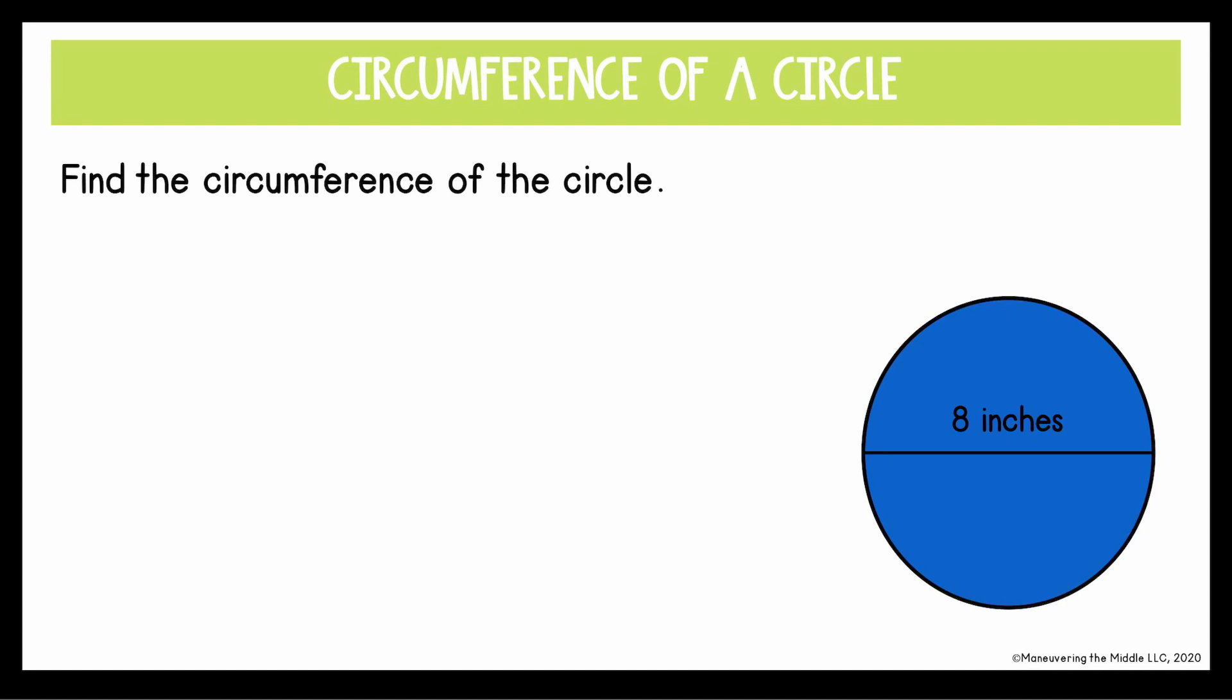Let's work through some examples, and I would encourage you at any point in this video to pause it at the beginning of an example to work through it and try it on your own before you see the solution completed. Find the circumference of the circle. In this diagram, we're given the diameter, so I will first write the formula as C equals pi d. If I substitute in the diameter, which here is 8, we can see that we need to multiply pi times 8.